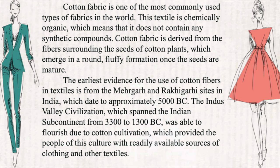The earliest evidence for the use of cotton fibers in textiles is from Mehengara and Rakigara sites in India, which date to approximately 5000 BC. The Indus Valley civilization, which spans the Indian subcontinent from 3300 to 1300 BC, was able to flourish due to cotton cultivation, which provided the people of this culture with readily available sources of clothing and other textiles.